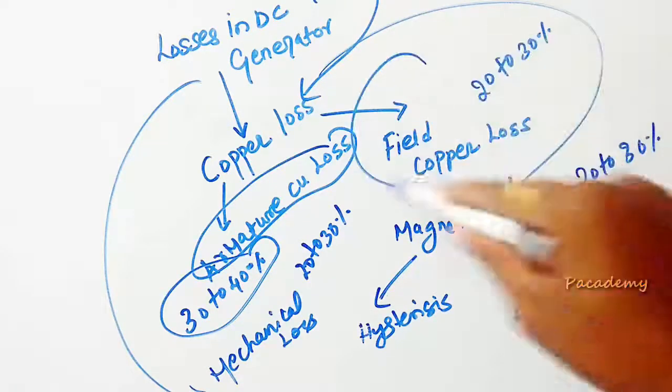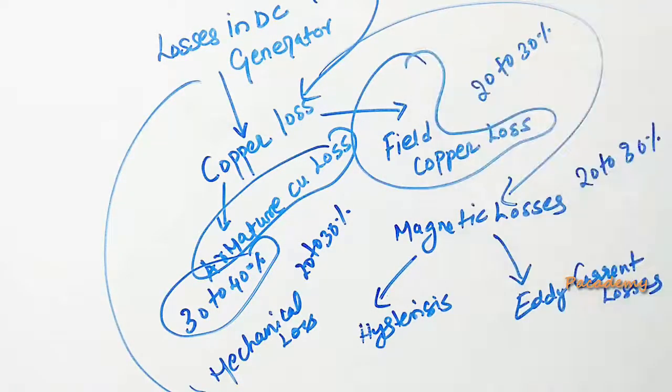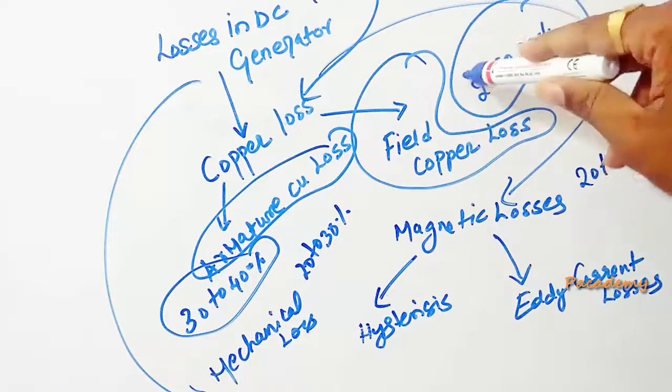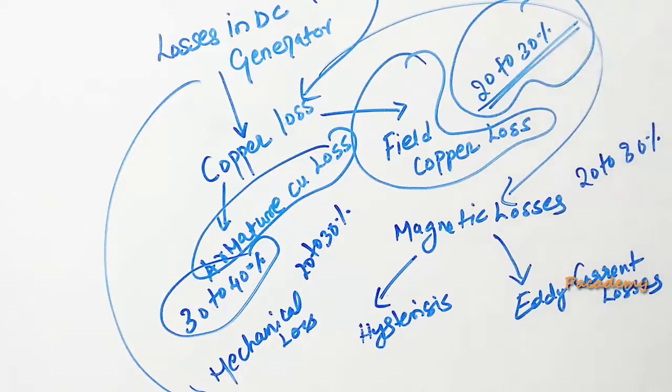The other loss which happens is the field copper losses. The I2R loss or the copper loss is happening in the field winding and this accounts to around 20 to 30% of the total losses.